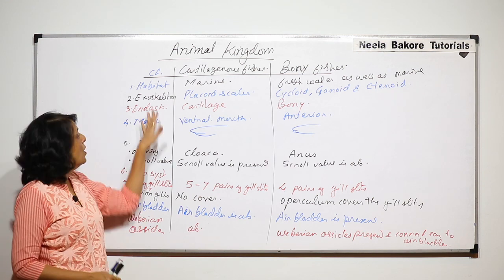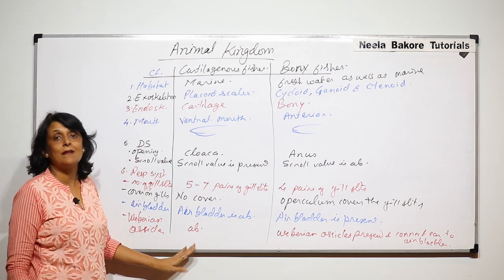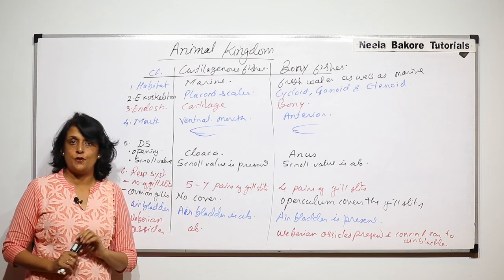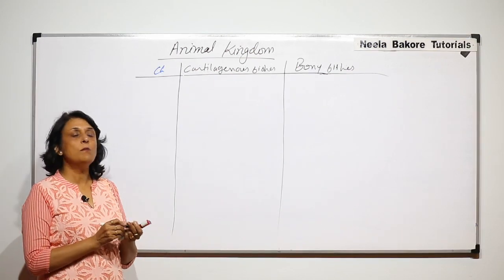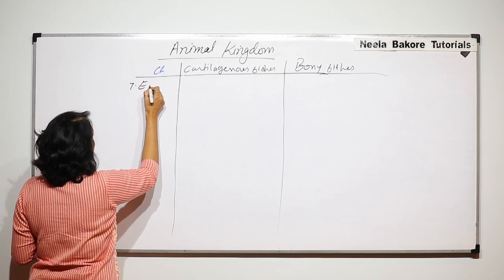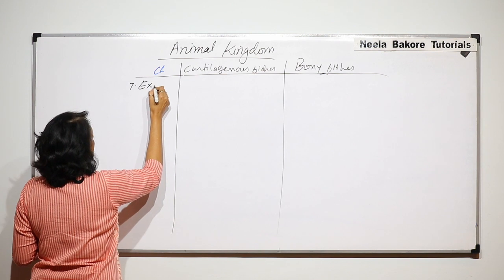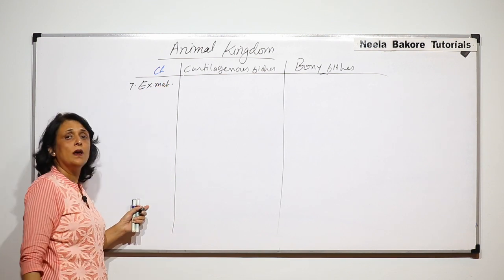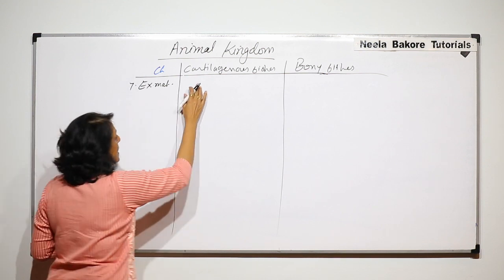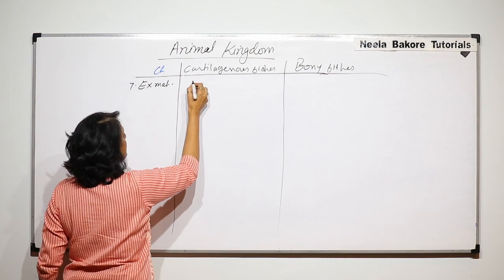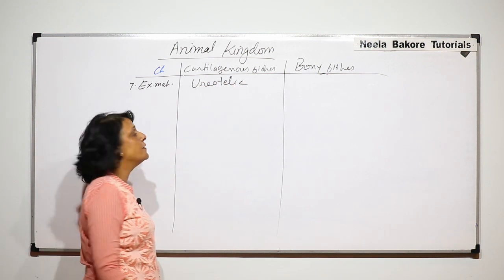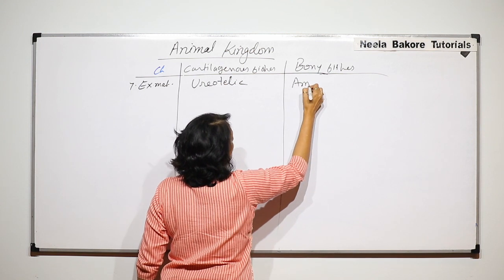So here we have compared them on six criteria. Now let us take a few more. The seventh point concerns the excretory material or nitrogenous waste excreted: cartilaginous fishes are ureotelic, whereas bony fishes are ammonotelic.